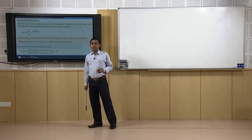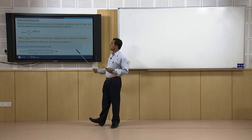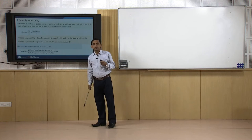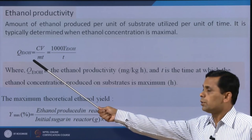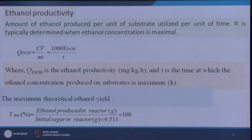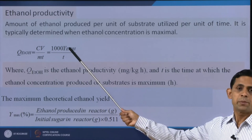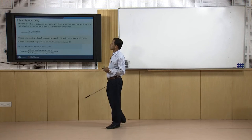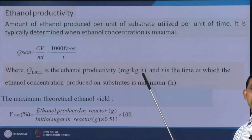What is the ethanol productivity? If we determine the ethanol yield and divide it by time, we get ethanol productivity. The definition is: the amount of ethanol produced per unit of substrate utilized per unit of time. This is written as Q_EtOH = C·V / (M·t). If the unit is grams per kilogram, that is fine; otherwise, if expressed in milligrams per kilogram, multiply by 1000. So ethanol productivity equals 1000 × Y_EtOH / t, with units of mg per kg per hour.